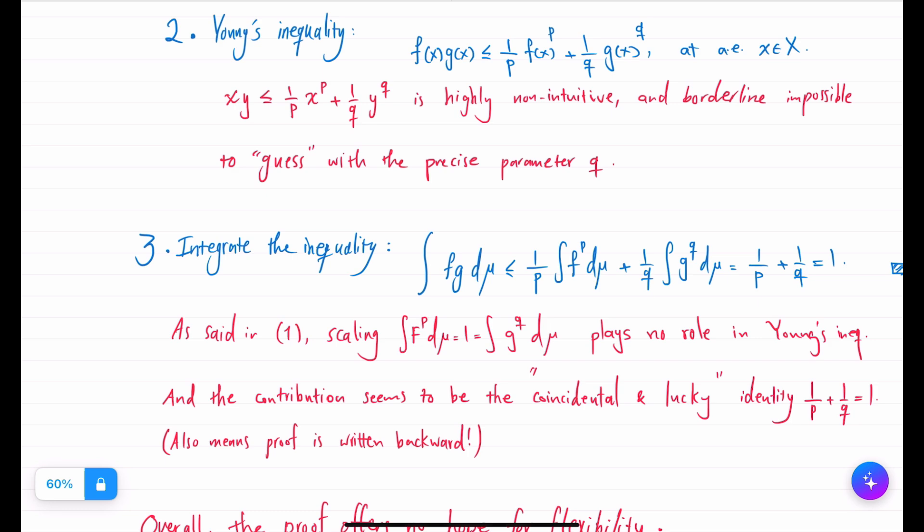I don't think any undergraduate would come up with this inequality on their own. No one looks at a number p and says let me find the number q so that 1 over p plus 1 over q is equal to 1, and then there will be some inequality of this very specific form to hold for all pairs of numbers. And it's really sharp.